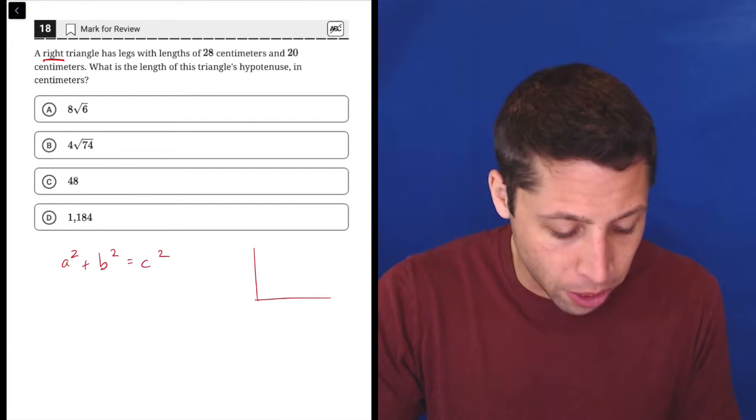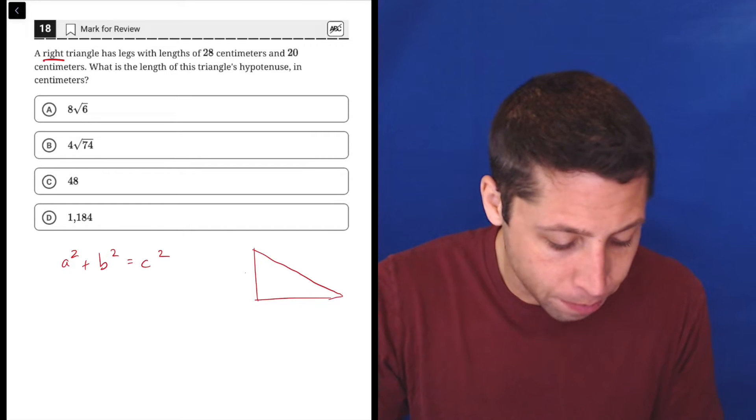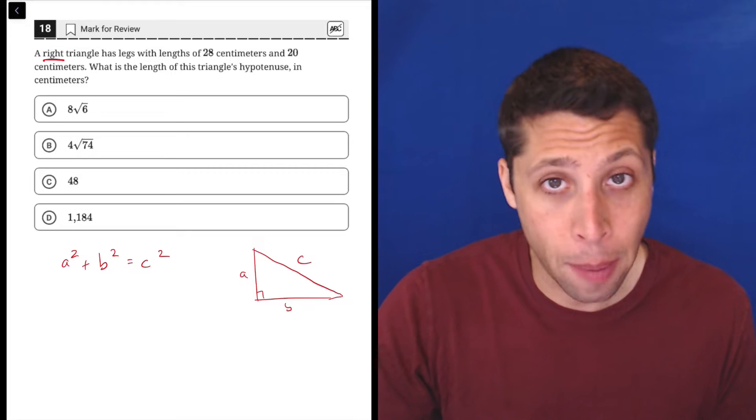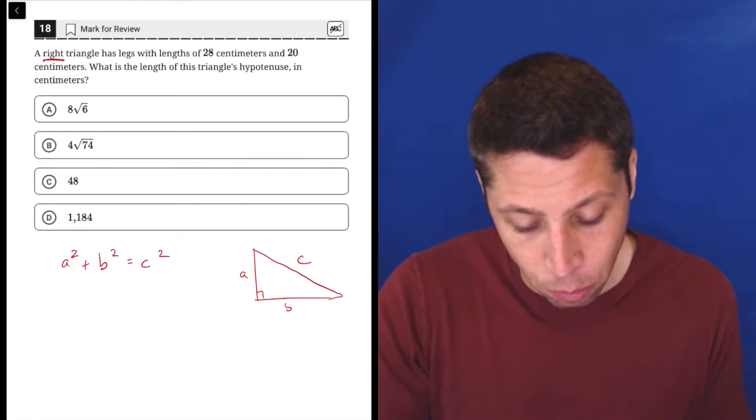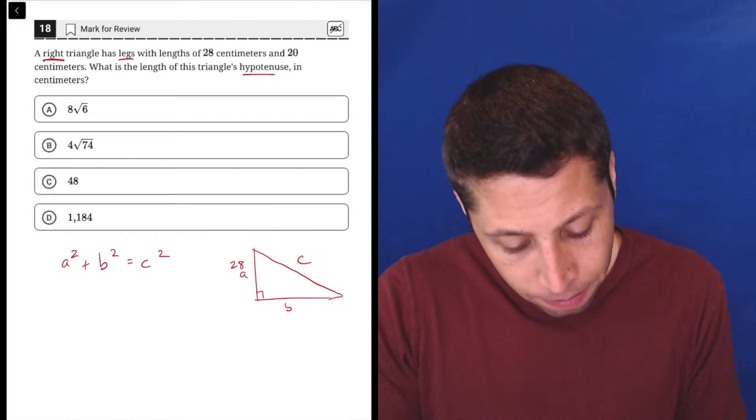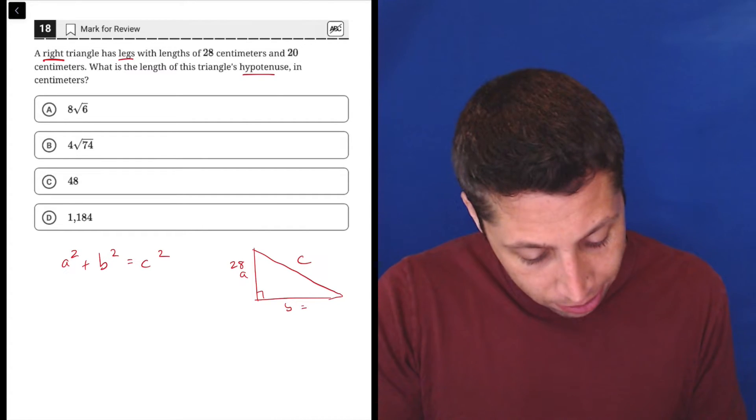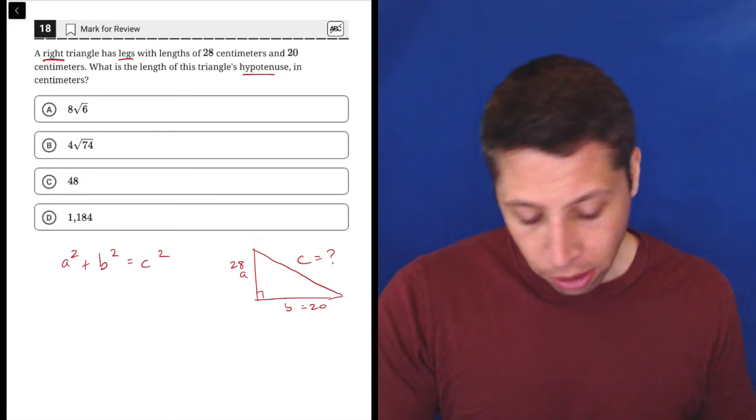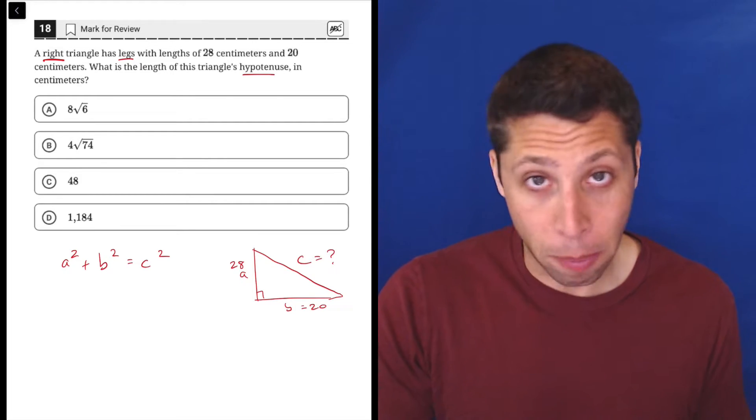And what that refers to is that the A and the B represent the legs of a right triangle and C is the hypotenuse. So notice they're using those exact same words. We have legs and they want the hypotenuse. So they're giving us that A is 28, B is 20, and then C is some mystery. So that's what we're solving for. This is literally just about plugging things into the right places.